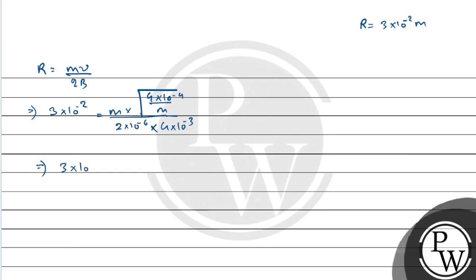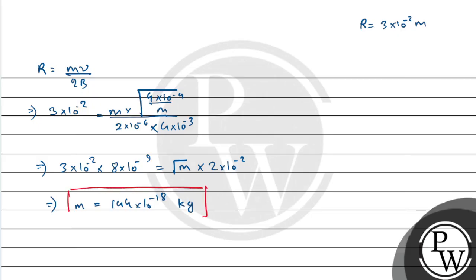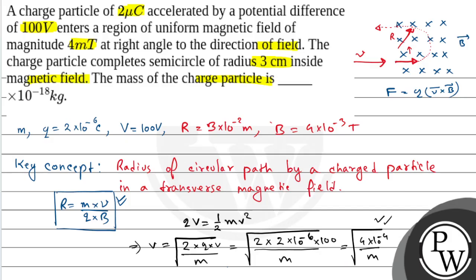This gives 3 into 10 to the power minus 2 into 8 into 10 to the power minus 9 equals root m into 2 into 10 to the power minus 2. Taking root out, this equals 1.4 into 10 to the power minus 18 kg. So the mass of the charged particle is 1.4 into 10 to the power minus 18 kg. That means our answer is: the mass of the charged particle is 1.4 into 10 to the power minus 18 kg.